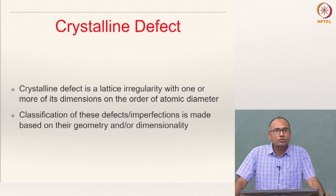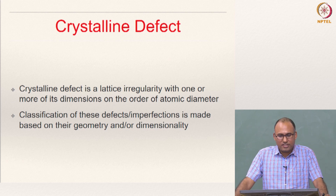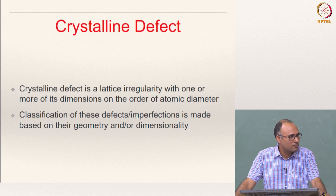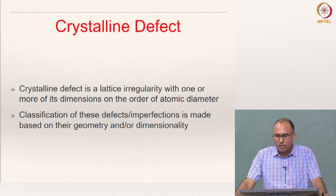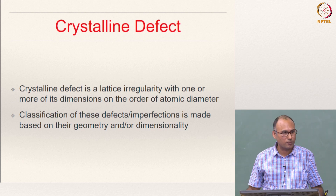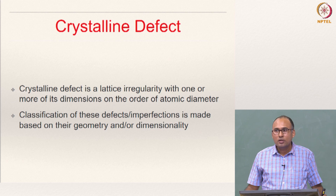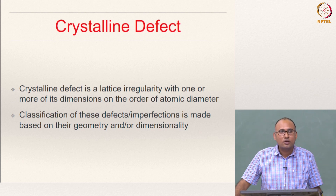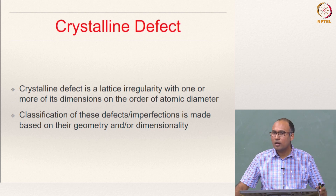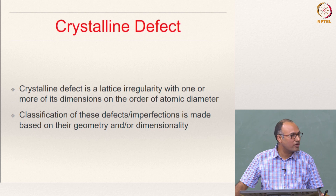Now we need to define what we mean by a crystalline defect. A crystalline defect is a lattice irregularity with one or more of its dimensions on the order of atomic diameter. It is a lattice irregularity — there is some irregularity in the lattice structure. How do you classify these defects? They can be classified based on the geometry or dimensionality of the defect.